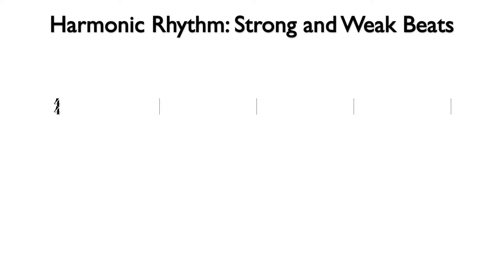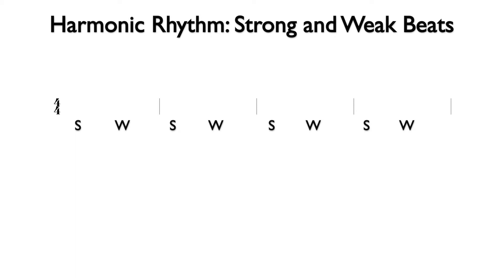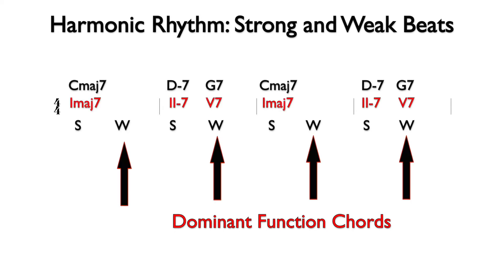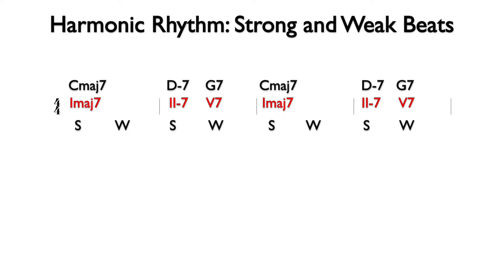It is also common for chords to change on beats one and three of a measure in four-four time. When this happens, beat one is strong and beat three is weak. In this case, we still expect the dominant function chords to be in the weak position. Here is an example. Notice that where there are two chords in the measure, the dominant chord falls in the weak position in the second half of the measure.